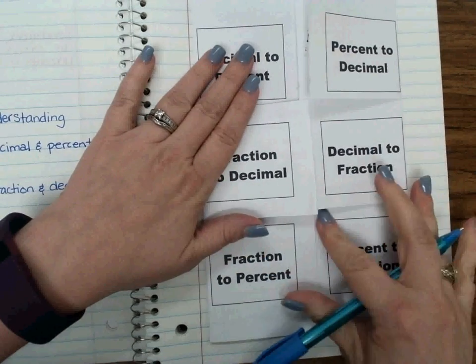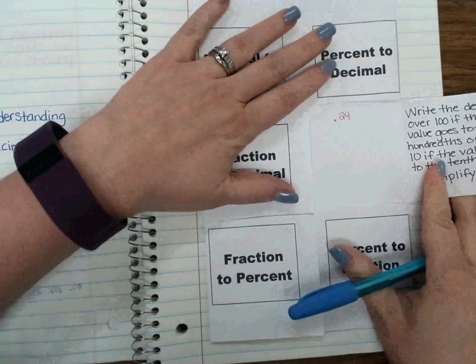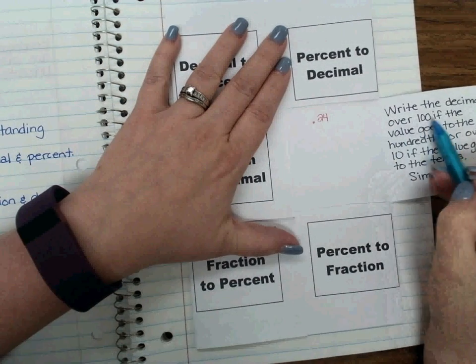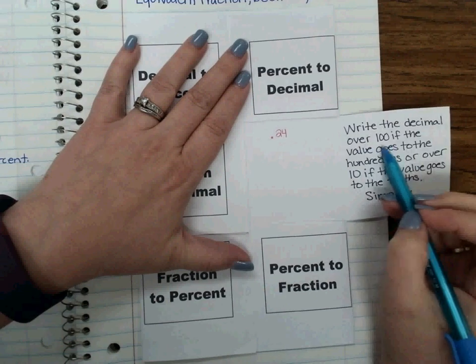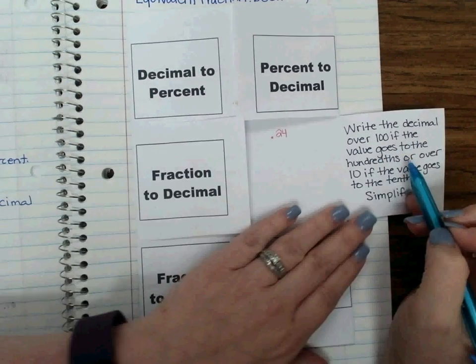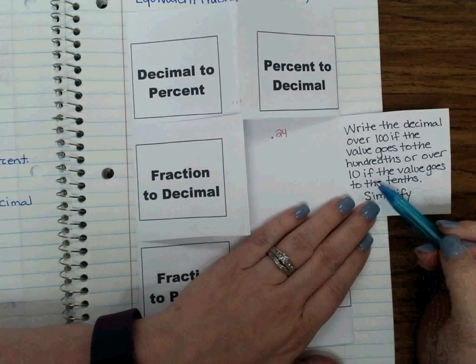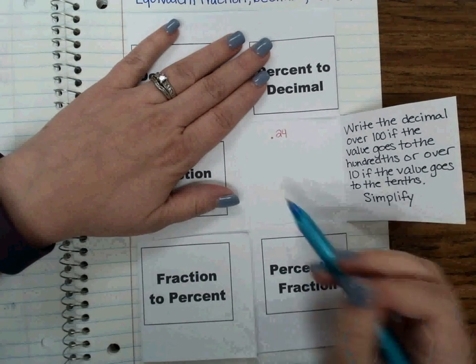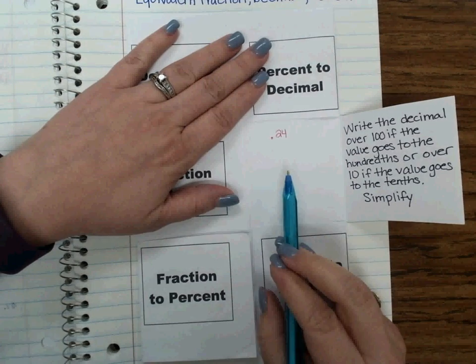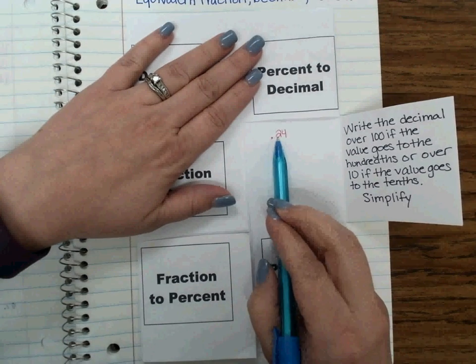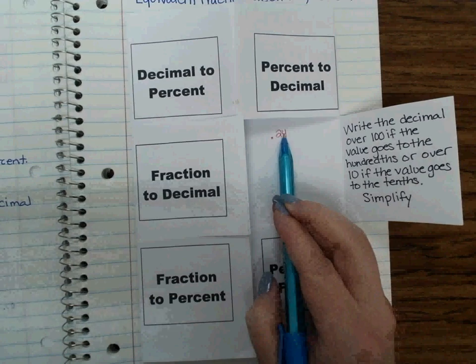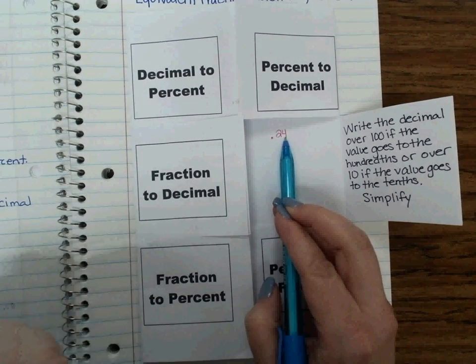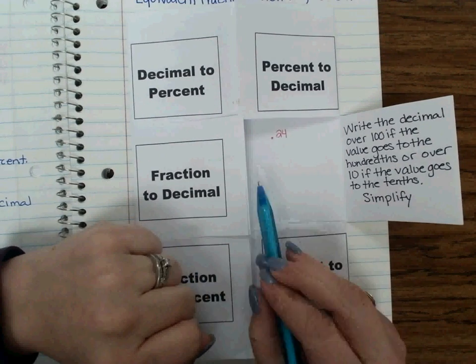Next up, we need to change our decimal into a fraction. So I have this decimal right here, 0.24. It says write the decimal over 100 if the value goes to the hundredths, or over 10 if the value goes to the tenths, and then simplify. So what we're basically saying is you have to name that decimal. It says 0.24. That last place value of my number is what we say it goes out to. That 4 is in the hundredths place. So this is 24 hundredths.